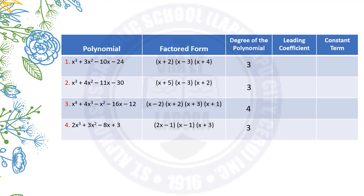The basis for the number of factors is the degree of the polynomial. In the first polynomial its degree is 3, therefore we have 3 factors. For the second polynomial, its degree is 3, so we have 3 factors. In the third polynomial, its degree is 4, so we have 4 factors. The leading coefficients of the polynomials are 1, 1, 1, and 2. This leading coefficient gives us a hint that the x terms, or the first terms in the factored form, have a product equal to the leading term of the polynomial.